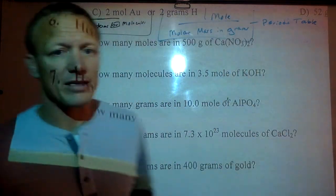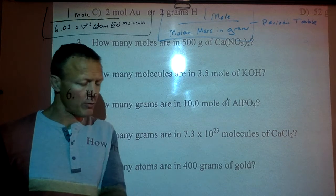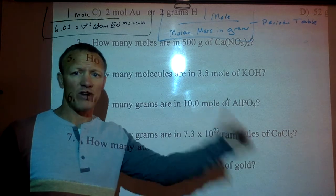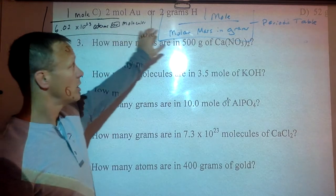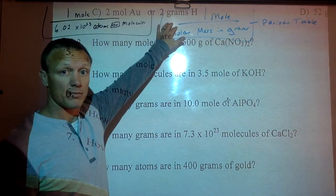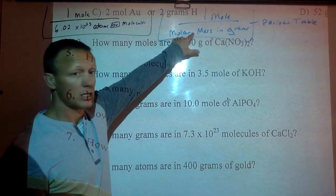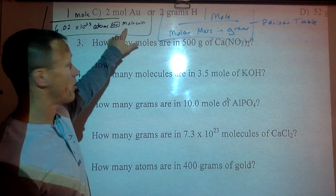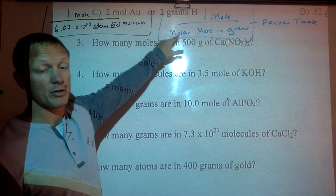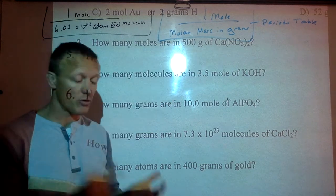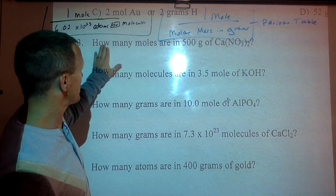So here's, I'll do about three examples of conversions. One of the things I always tell students, if a problem starts with moles, or finishes with moles, it's a one-step problem, meaning I'll only use this conversion or this conversion. If you're going from grams to atoms, molecules, or particles, it will be a two-step conversion. If you're going from atoms, molecules, or particles to grams, it will be a two-step conversion. But if you're starting with moles or finishing with moles, it's a one-step conversion.